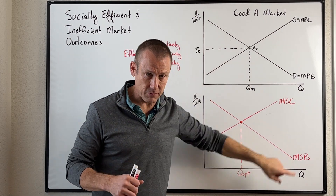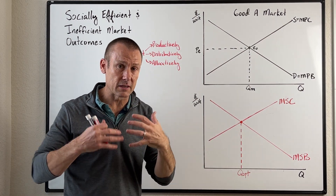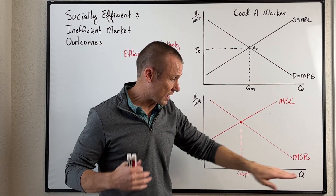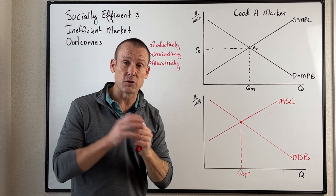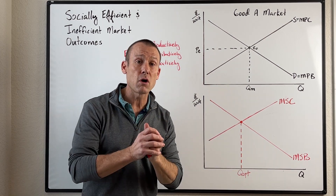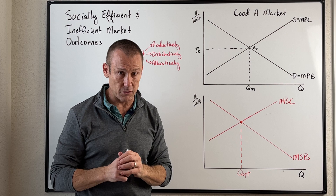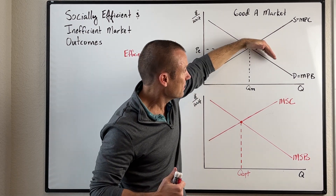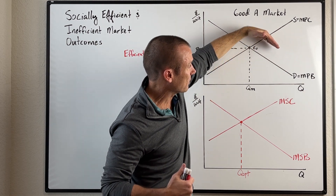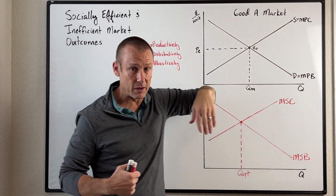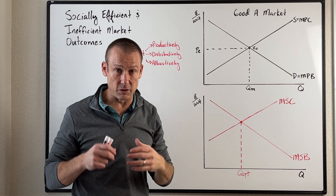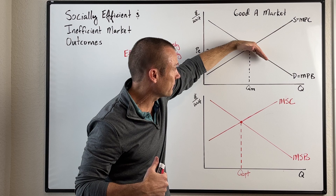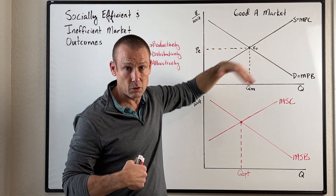For marginal social benefit — that looks at everything related to consumption, including private benefit plus any external costs or benefits from consumption. If there are external benefits from consumption, the marginal social benefit curve lies above marginal private benefit. If consumption creates costs to third parties, then marginal social benefit lies below marginal private benefit.